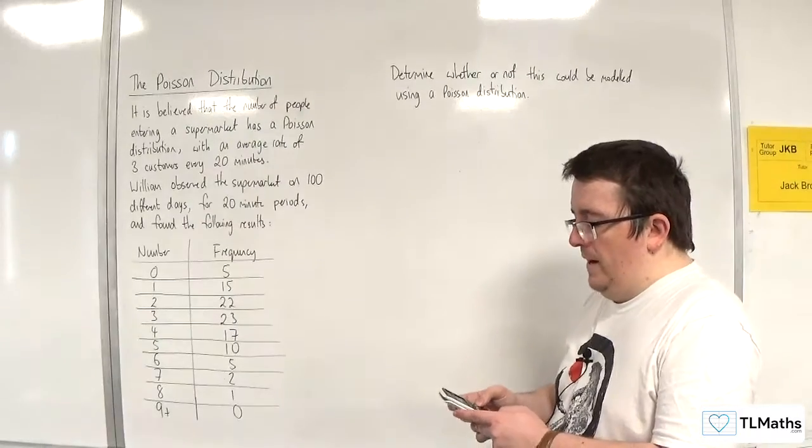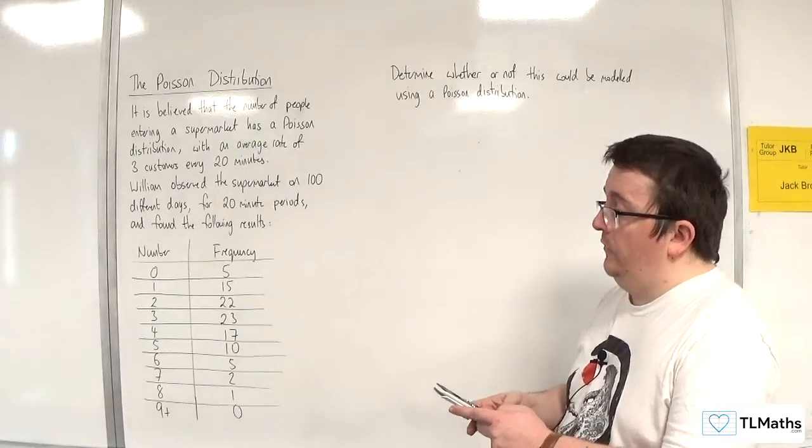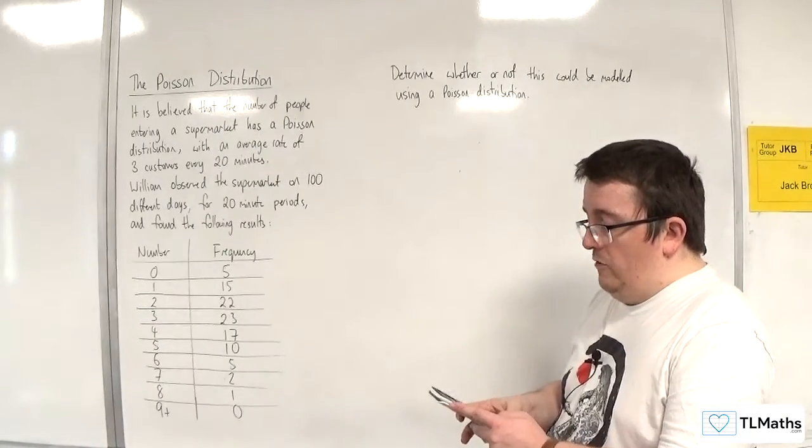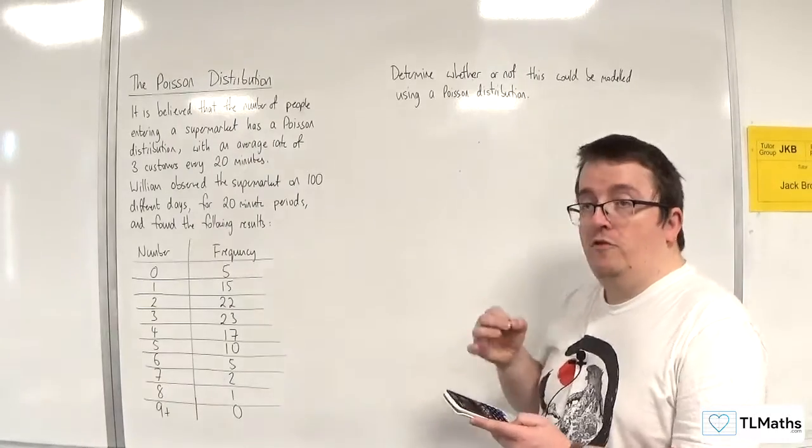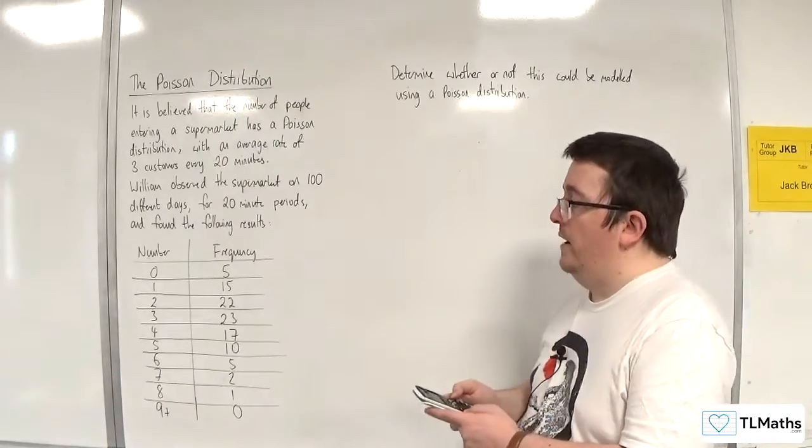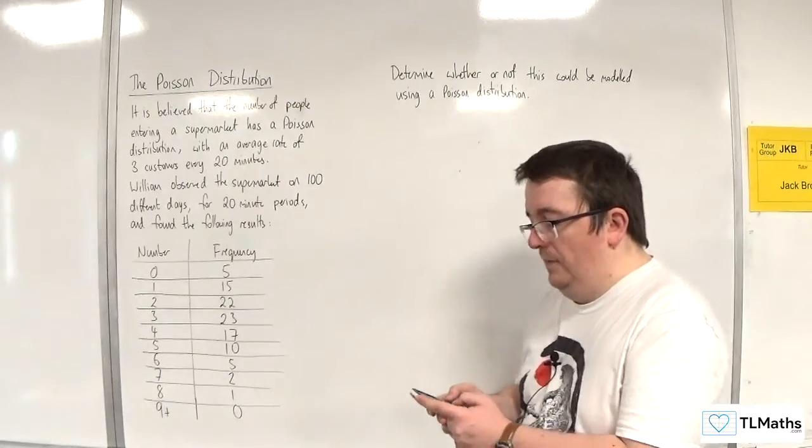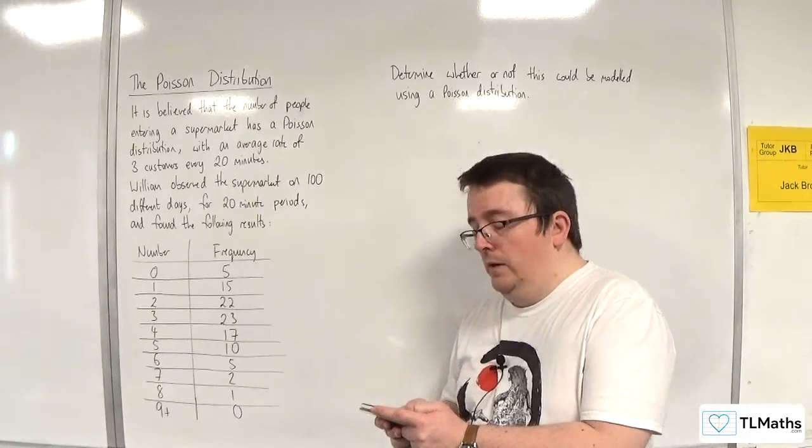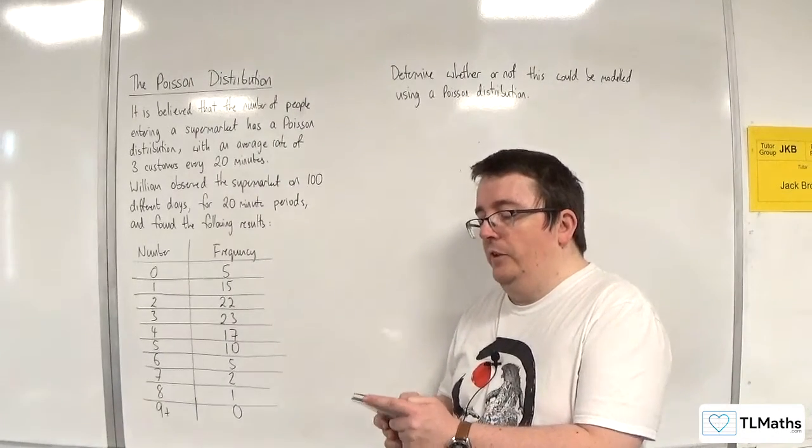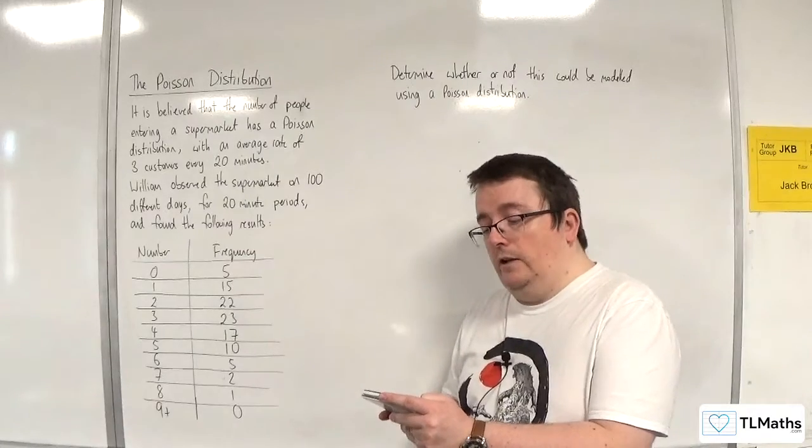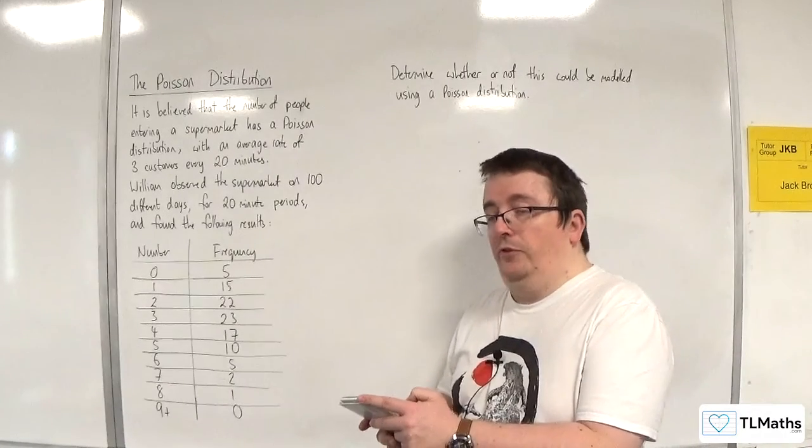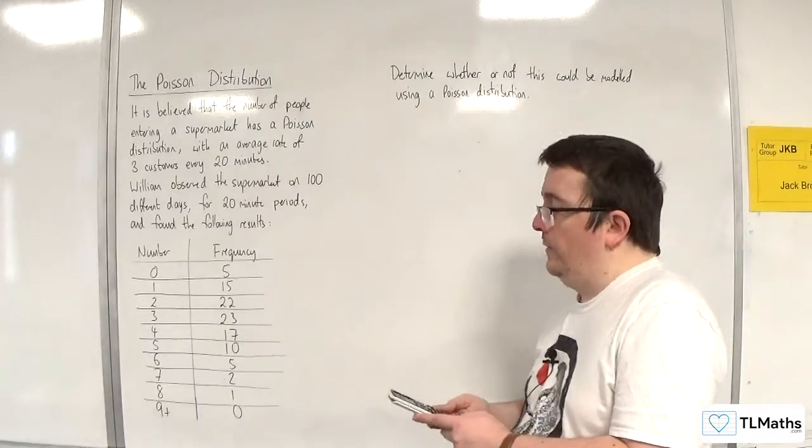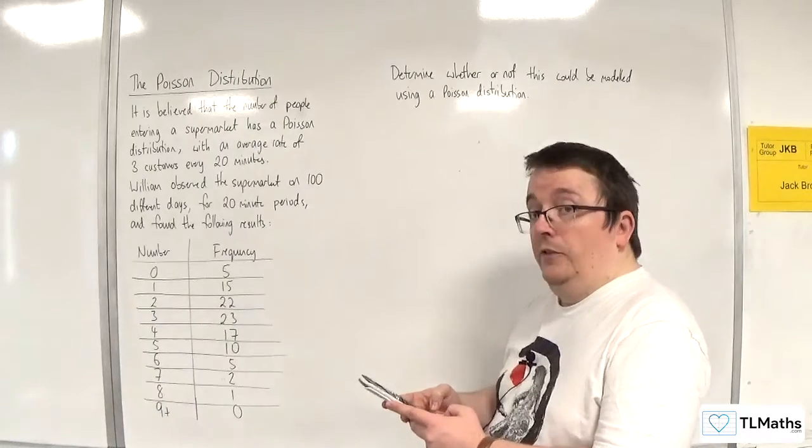So I'm going to go to menu, number 6, statistics, one variable. And make sure you've got the frequency column on the right hand side. If you don't have the frequency column, then you need to go shift and then menu. That goes into the setup. Then scroll down until you see number 3, statistics, and then turn the frequency on. Okay, so that's for the Casio ClassWiz.